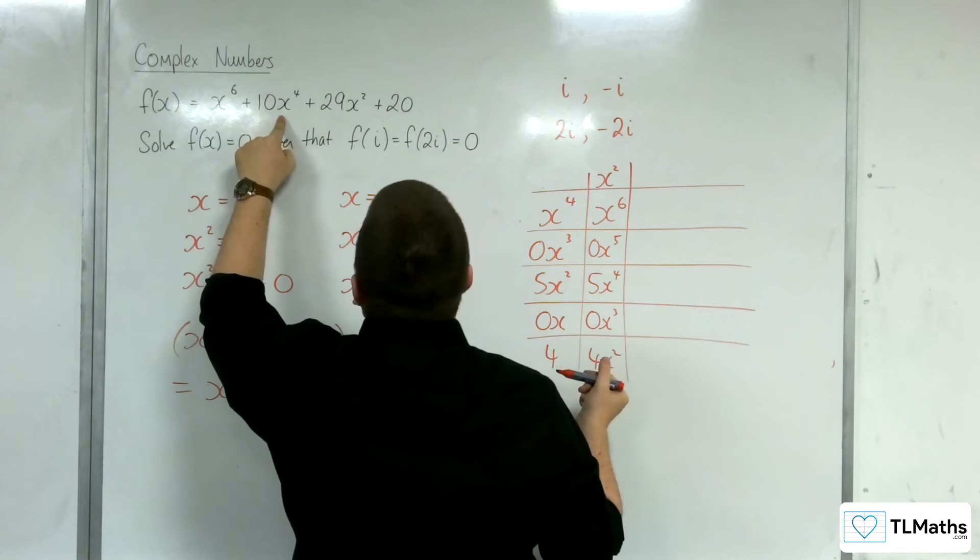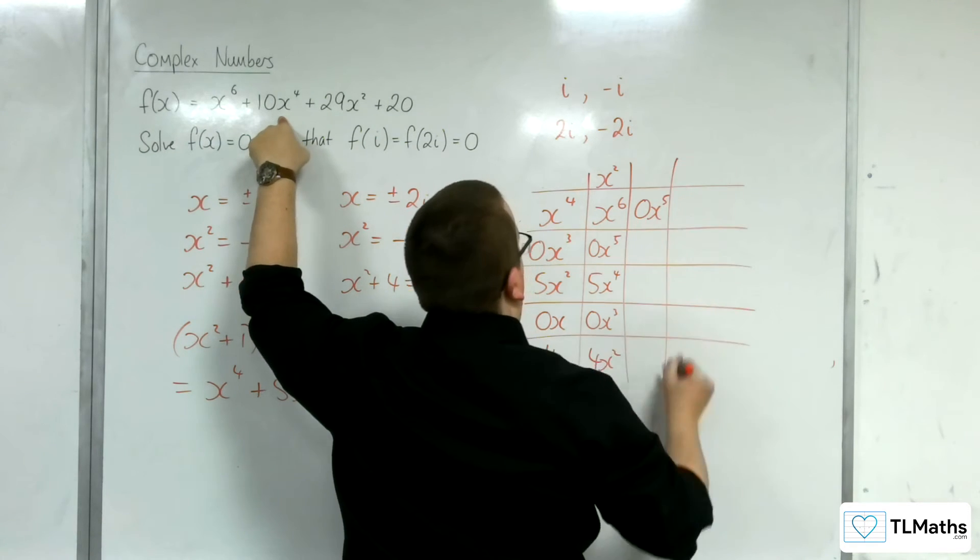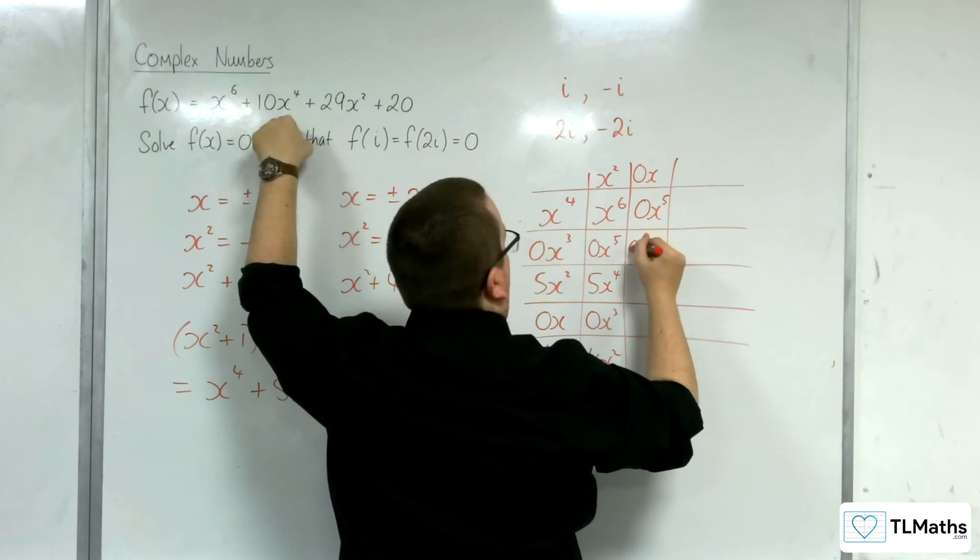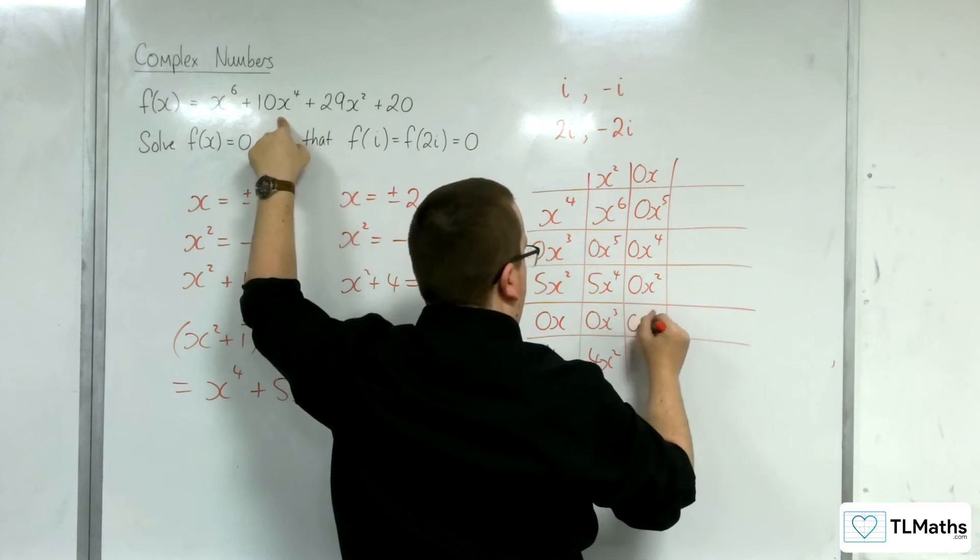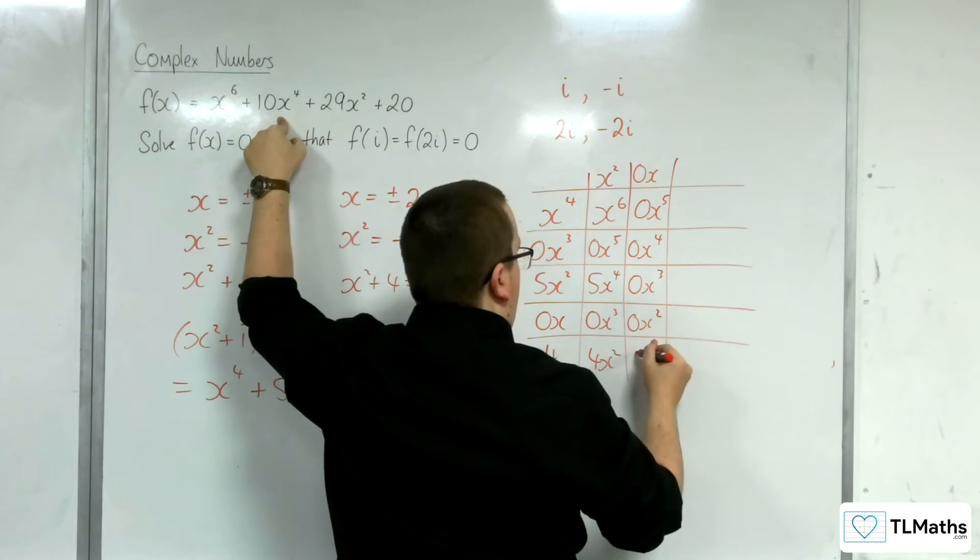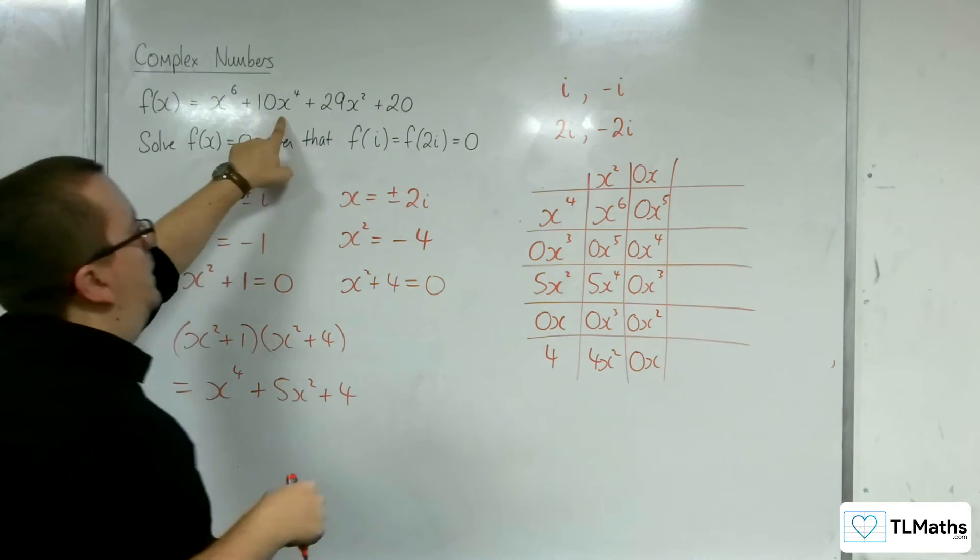Right, I need 10x to the 4, there are no x to the 5, so I don't need anything there. So that would be 0x to the 4, 0x squared, oh sorry, x cubed rather, 0x squared and 0x. Didn't really need the placeholders there, but I've put them in anyway.